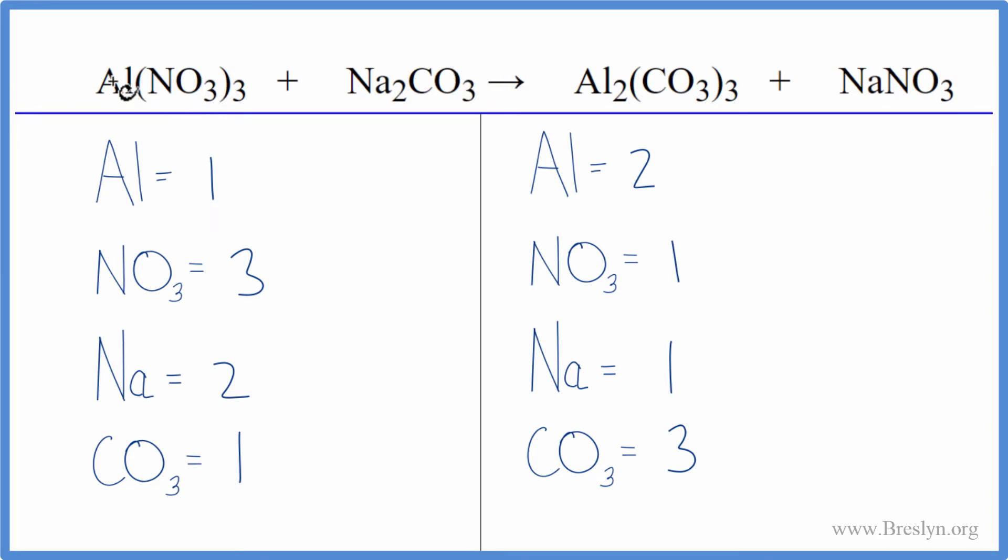Let's balance the equation. We could put a two as our coefficient here, and that would balance the aluminums. One times two, that'll give us two aluminums. The nitrates, we have three times the one, so we have three nitrates times this two here. So we have six nitrates.